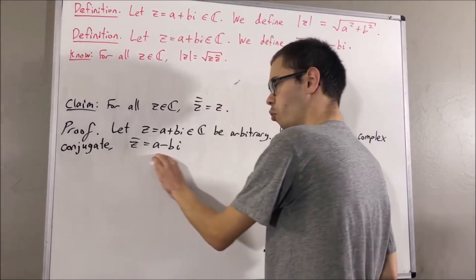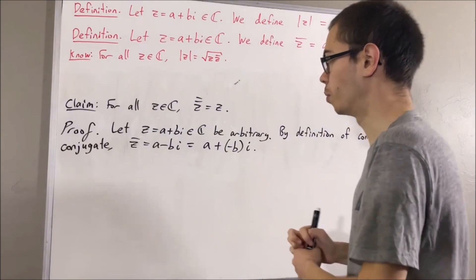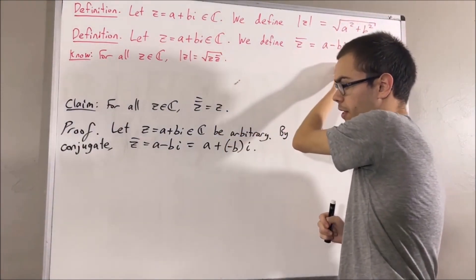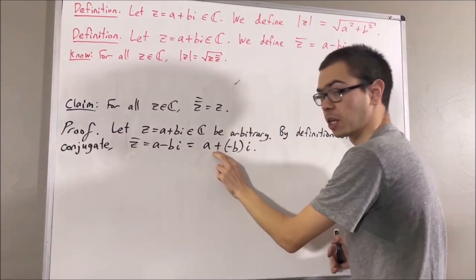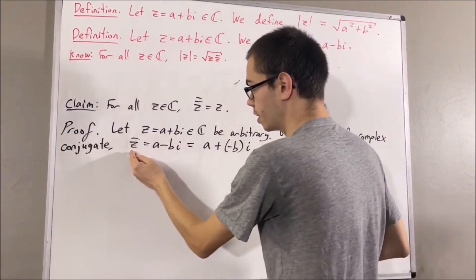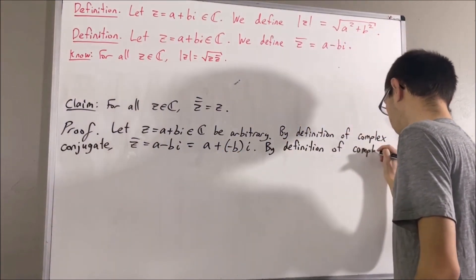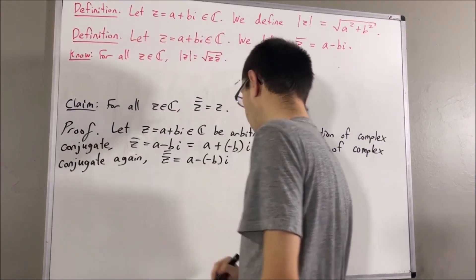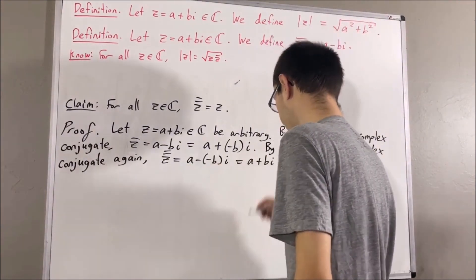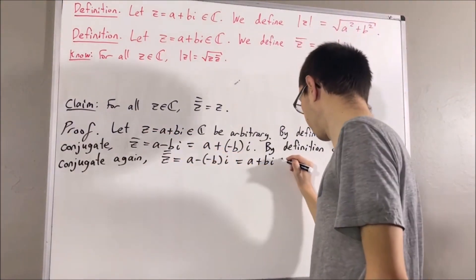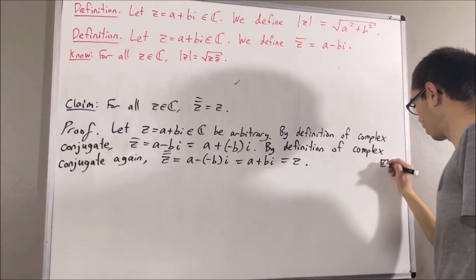By definition of the complex conjugate, z bar equals a minus bi. I'm going to rewrite this as a plus (negative b) times i, because now we're going to apply the definition of the complex conjugate again. By definition, z bar bar is obtained by switching the plus sign to a minus sign, so z bar bar equals a minus (negative b)i. The two negatives cancel, leaving us with a plus bi, which equals z. So z bar bar equals z, which is exactly what we wanted to prove.